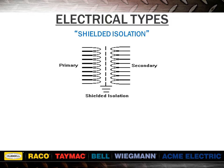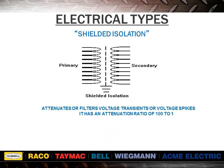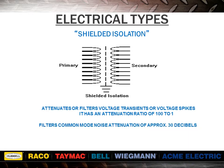A shielded isolation transformer has all of the features of an isolation transformer, plus it incorporates a full metallic shield between the primary and secondary windings. The shield is usually copper or aluminum. This electrostatic shield, or Faraday shield, is connected to earth ground and performs two functions: first, it attenuates or filters voltage transients or voltage spikes, with an attenuation ratio of 100 to 1; and second, it filters common mode noise, with an attenuation of approximately 30 decibels.